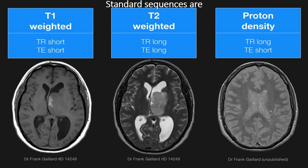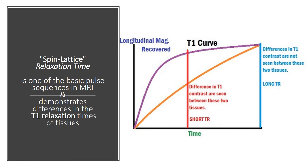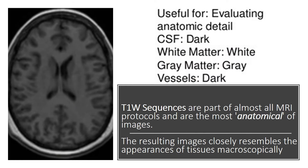Standard sequences are T1 and T2 weighted imaging and proton density. In T1 weighting, pixel brightness is dependent on proton density and weighted towards those protons that quickly retransmit radio frequency energy, decaying to their baseline unexcited state — short TR and short TE. Spin-lattice relaxation time is one of the basic pulse sequences in MRI and demonstrates differences in the T1 relaxation times of tissues. T1 weighted sequences are part of almost all MRI protocols and are the most anatomical of images.